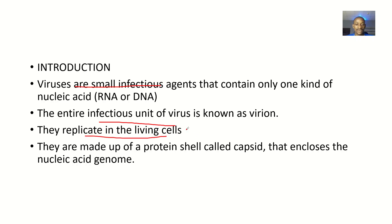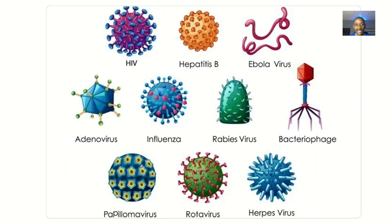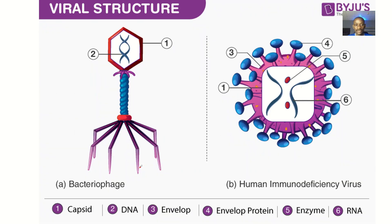These viruses replicate in living cells. They are made up of a protein shell called the capsid, which encloses the nucleic acid genome. So the capsid envelopes what is known as the genome. Number one here is the capsid, and number two is the DNA, which is also called the genome.